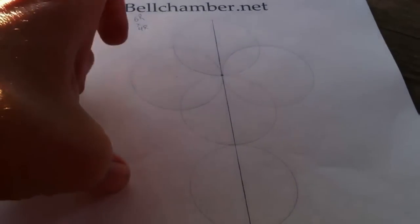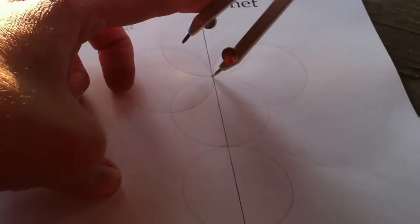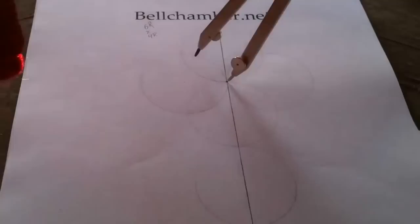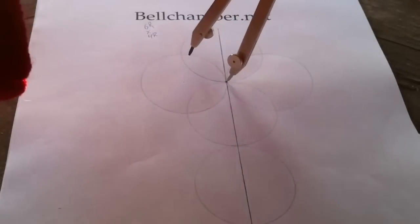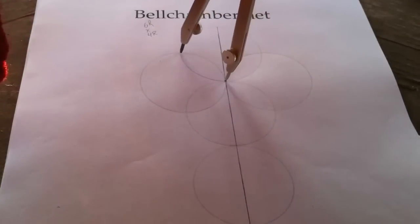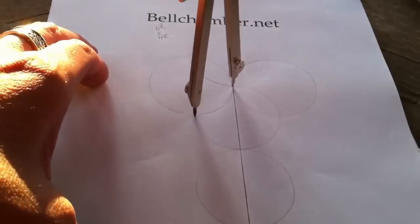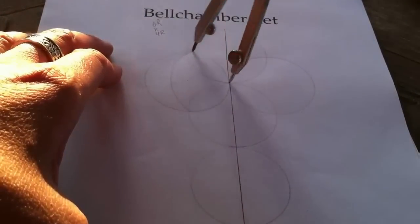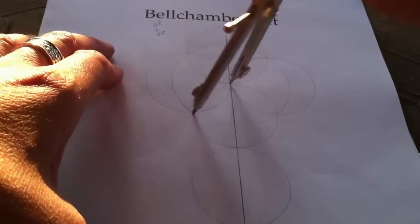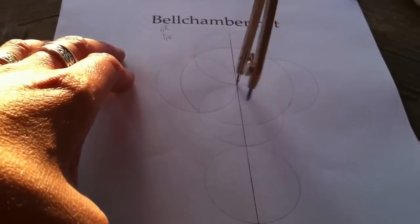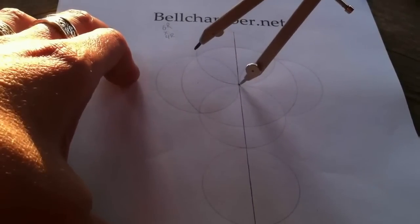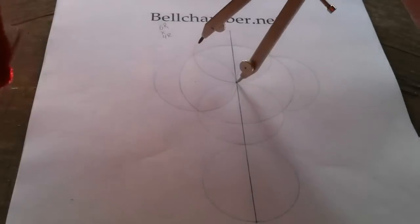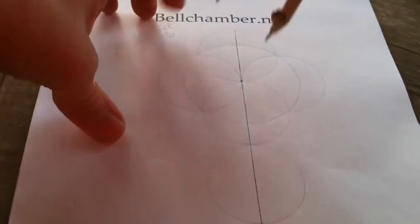Now here's where it gets fun. You're gonna change your radius length of your compass to where these circles intersect here. And you draw another circle like so. You're starting to see a nice shape here.